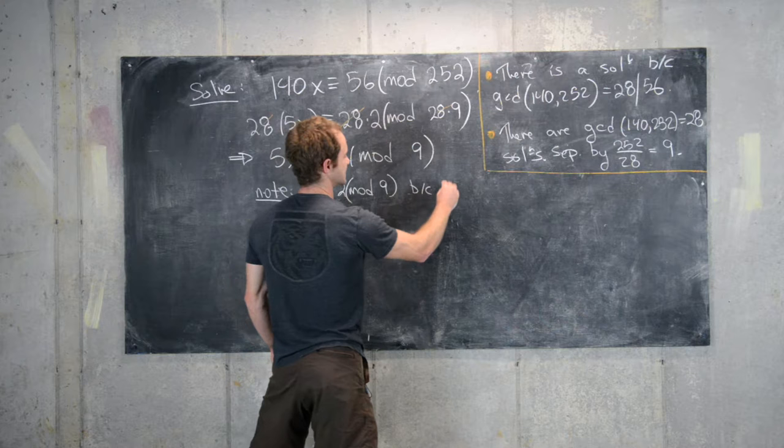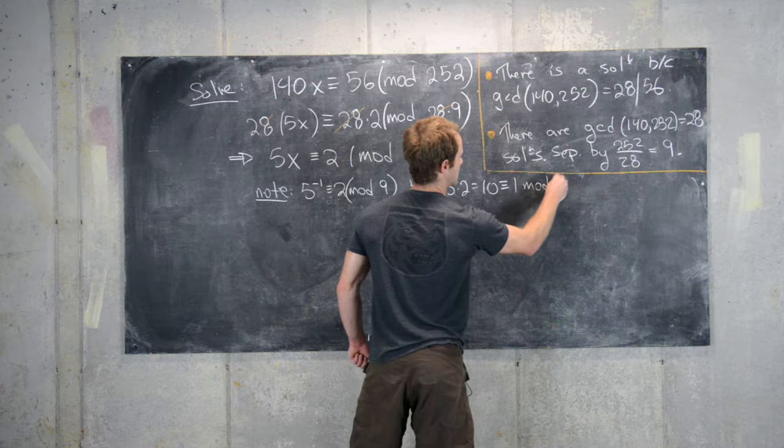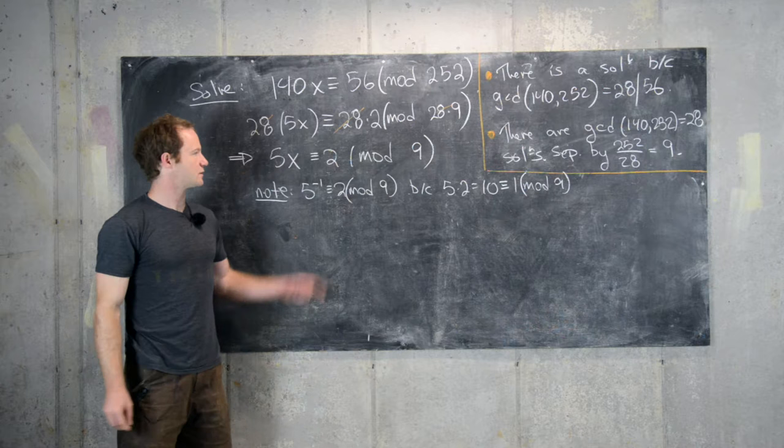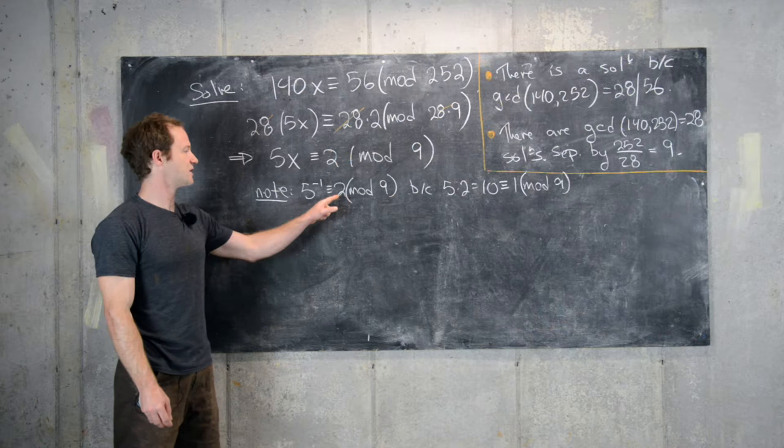And that's because 5 times 2 equals 10, which is congruent to 1 mod 9. So we can, in essence, do high school algebra on it in this case. But instead of dividing by 5, we're multiplying by 5 inverse, which happens to be 2.